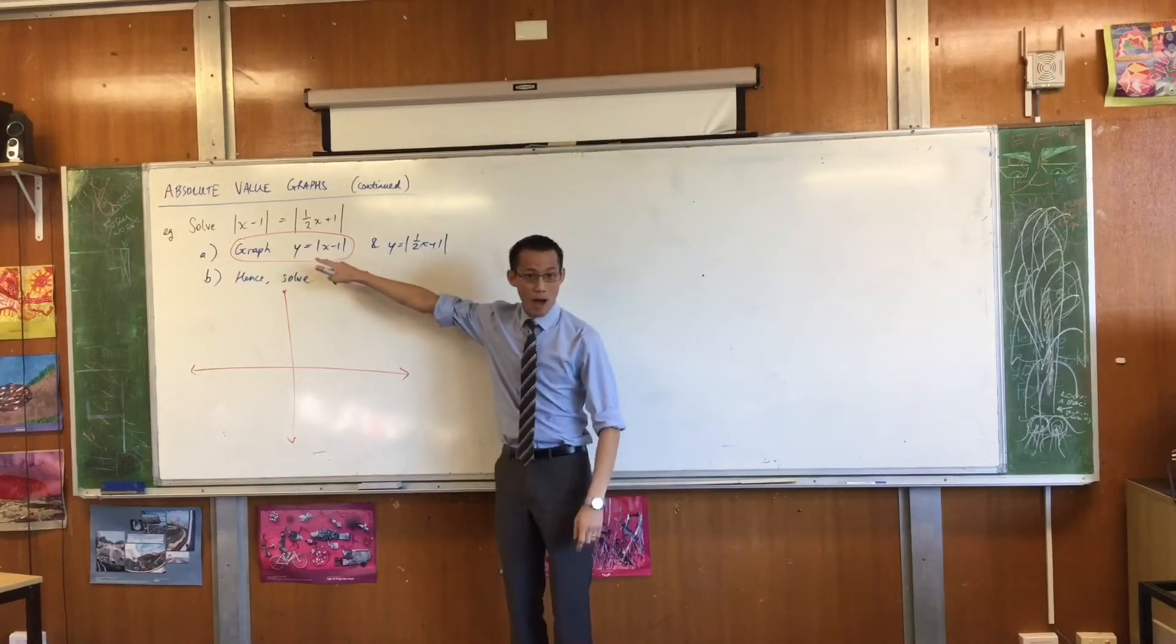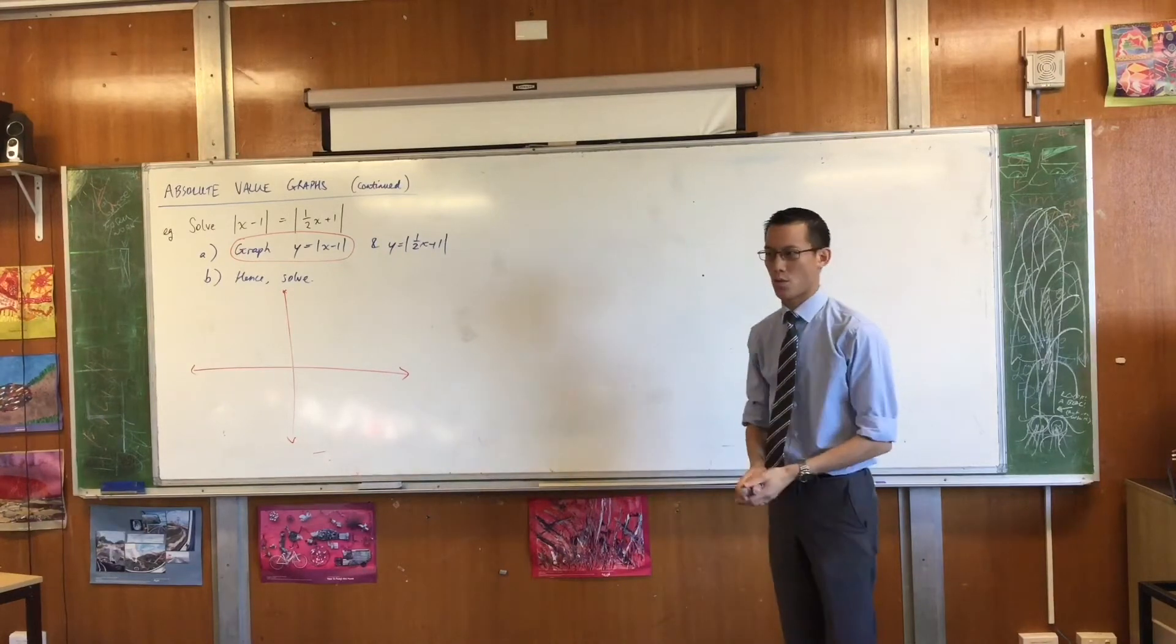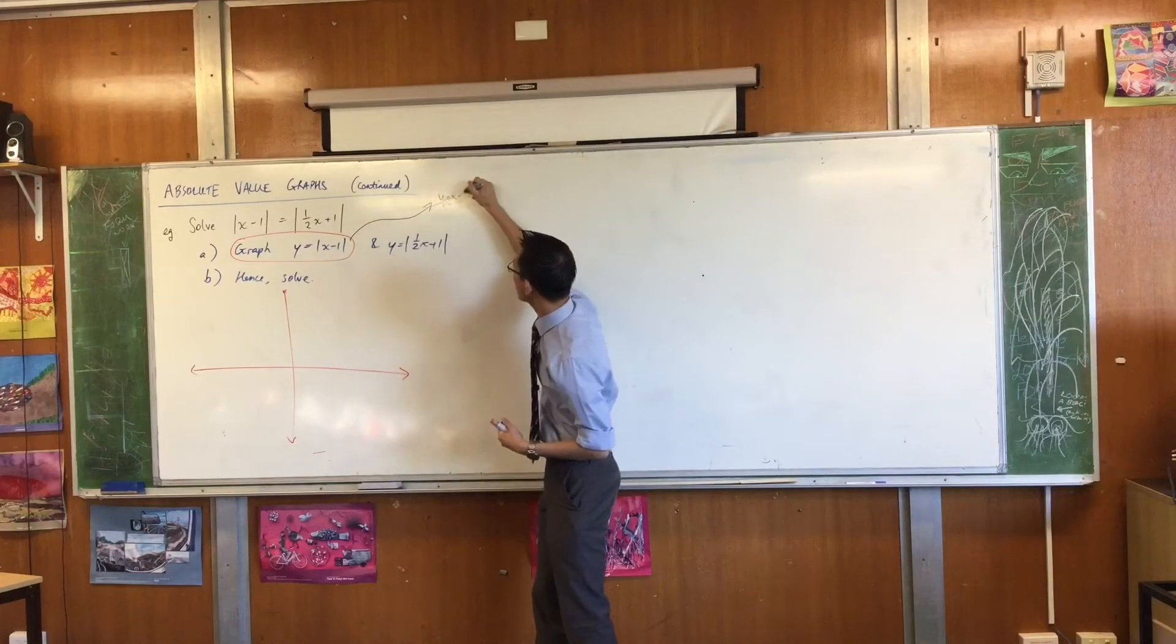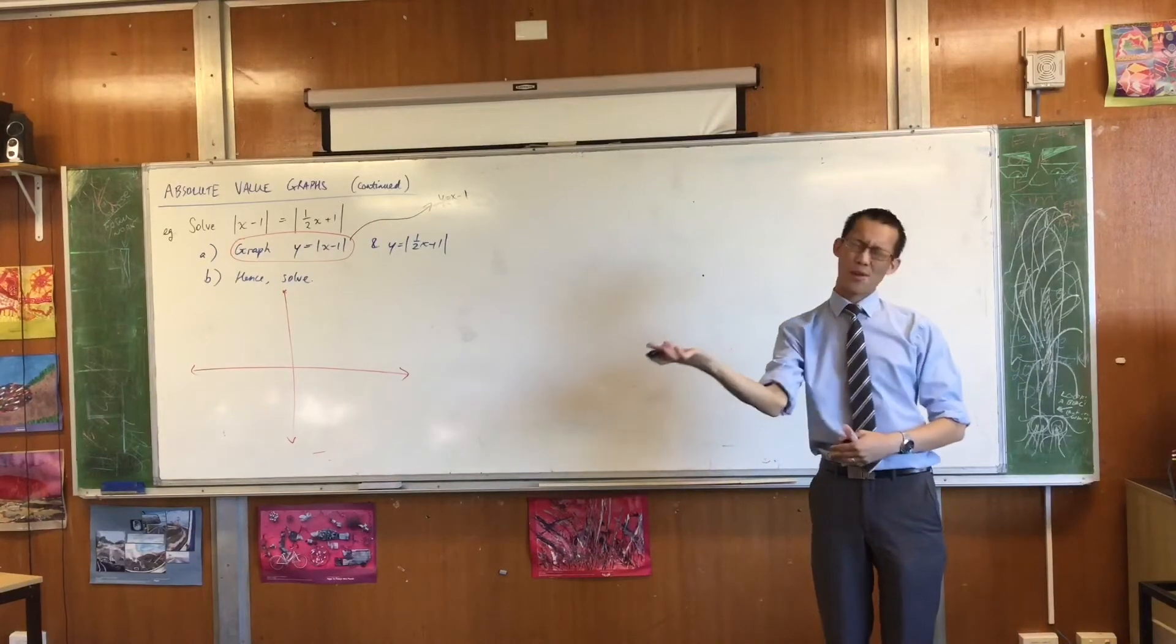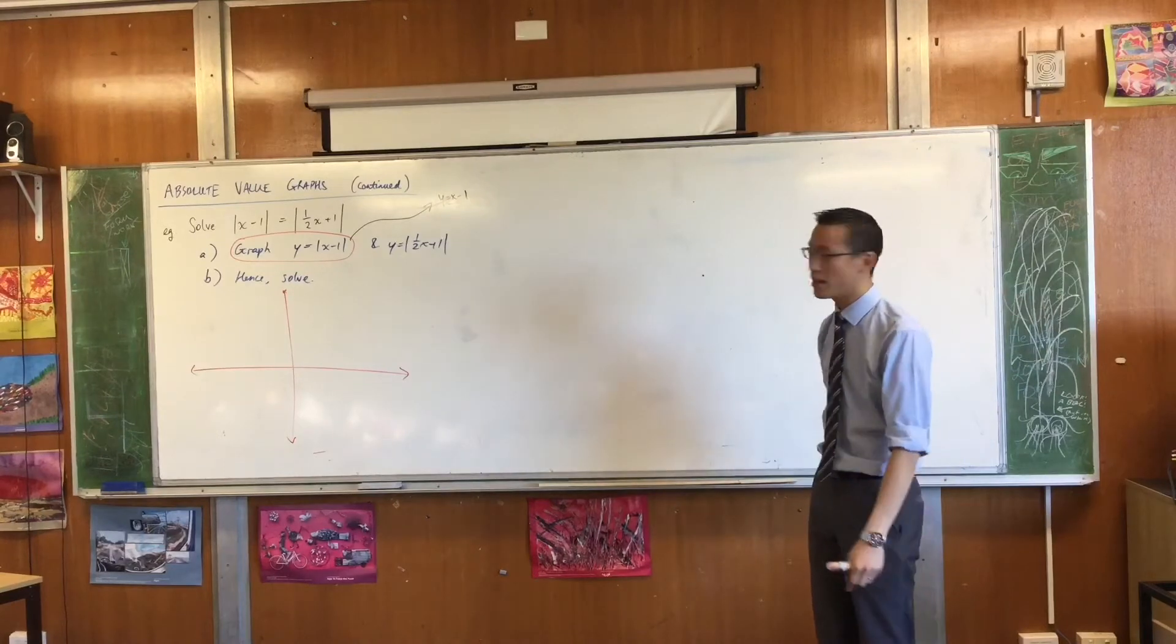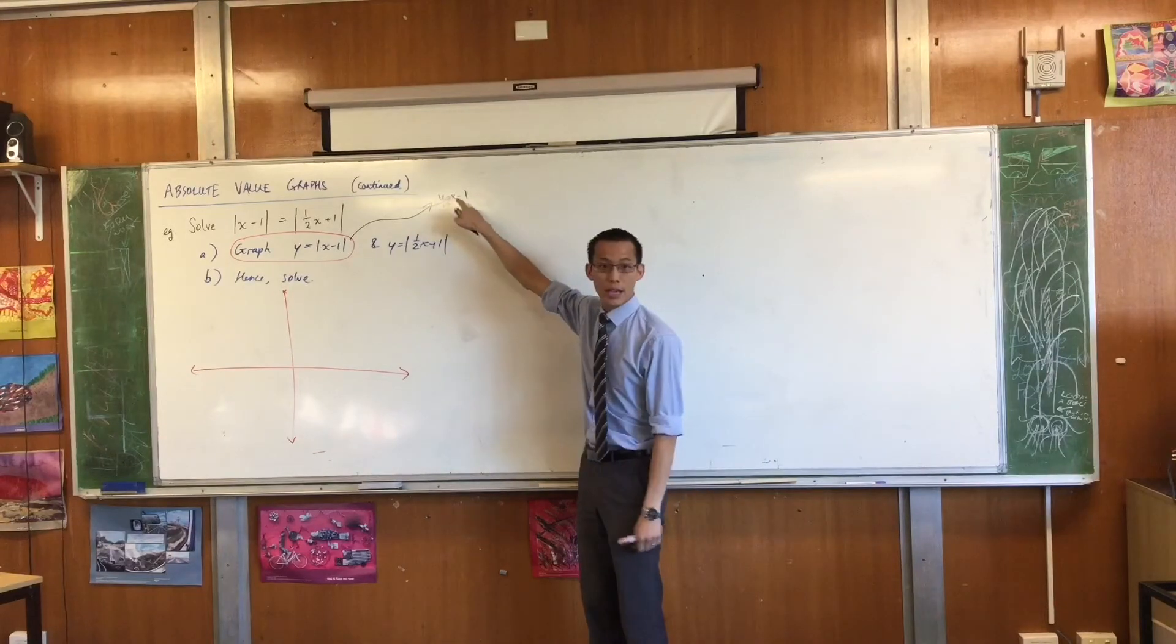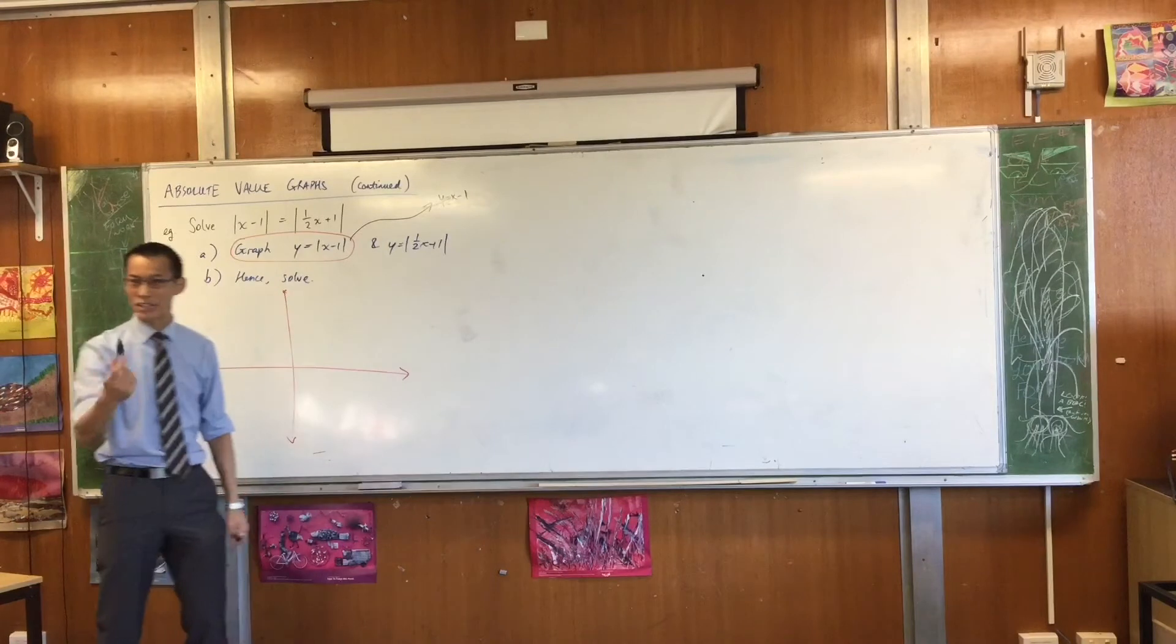Here's a way that you can graph y equals the absolute value of x minus 1 without very much algebra required. For starters, what we want to draw is a supplemental graph, which is y equals x minus 1. Clearly, y equals x minus 1 and y equals the absolute value of x minus 1 are very closely related. So maybe in light pencil you can draw y equals x minus 1.